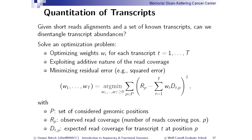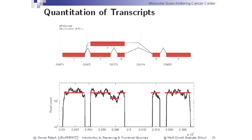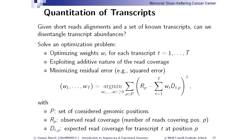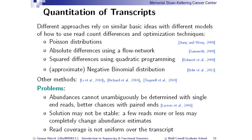Using squared error is not the best for this case but it's easy to understand. Essentially you estimate the abundance of the two transcripts such that the fitted values roughly match the observed coverage on each segment. There are different ways to do this: you could use a Poisson distribution, the log likelihood, absolute differences, or a negative binomial distribution for fitting.